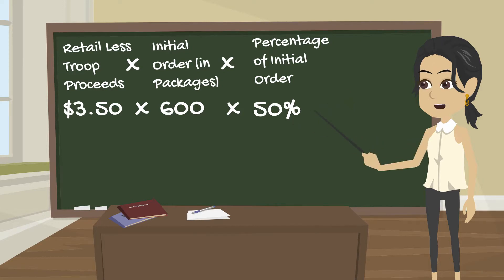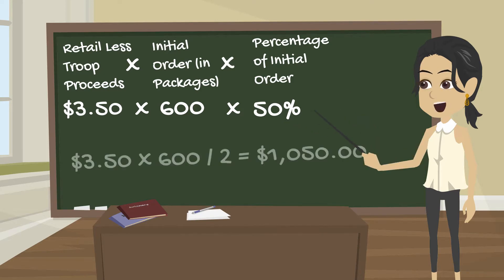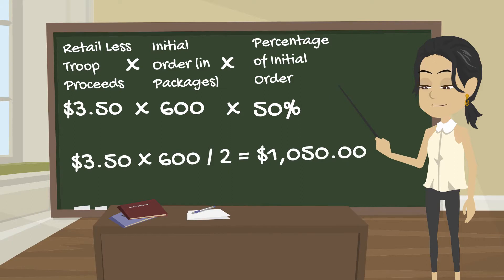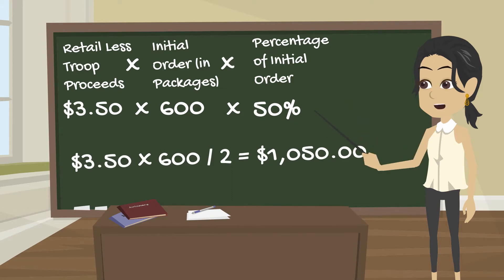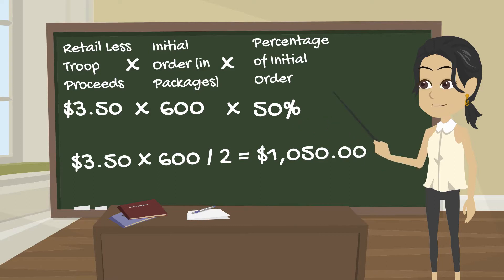This leaves your Troop with a total of $1,050 owed during the February 1st and February 15th ACH withdrawals. To calculate your final ACH, subtract your Initial Order from the total amount of packages you have ordered. Replace the 600 in this example calculation with the number you just came up with. You can then use the same calculation to determine the amount that GSCTX will withdraw at your final ACH.